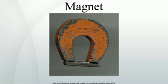Ferromagnetic materials are the ones normally thought of as magnetic. They are attracted to a magnet strongly enough that the attraction can be felt. These materials are the only ones that can retain magnetization and become magnets; a common example is a traditional refrigerator magnet. Ferrimagnetic materials, which include ferrites and the oldest magnetic materials magnetite and lodestone, are similar to but weaker than ferromagnetics. The difference between ferro- and ferrimagnetic materials is related to their microscopic structure.